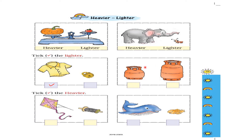Now we are going to compare these two cylinders. This cylinder is big in size and it weighs more, and this cylinder is small in size and it weighs less. So I am going to put a tick mark on the smaller cylinder because I am comparing the weight between the two cylinders.